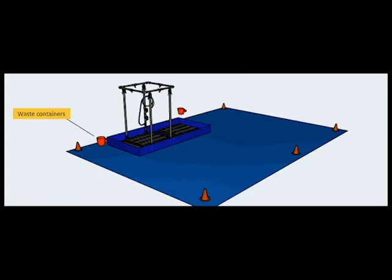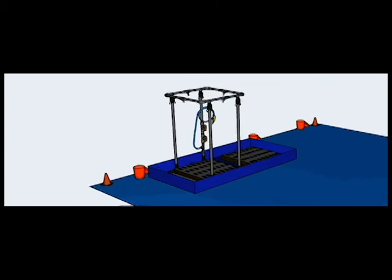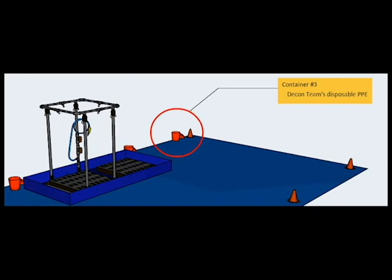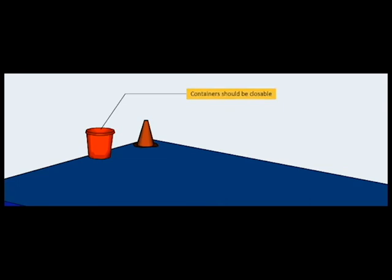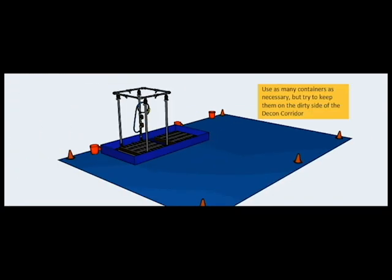Place solid waste collection containers along the dirty side to collect refuse. Position container number one so the patient can deposit their contaminated clothing and any gowns they use to cover them prior to decontamination. Collect all the dirty towels and other items used during the decontamination process in container number two. Use container number three to collect the decon team's disposable personal protective equipment. These containers should be closable to suppress the release of any vapors. Use as many containers as necessary but try to keep them on the dirty side of the decon corridor.